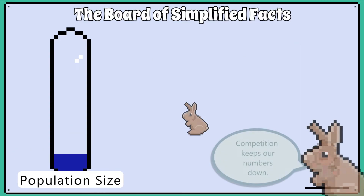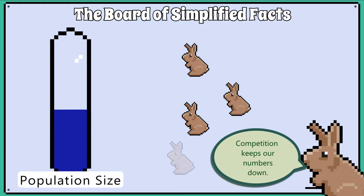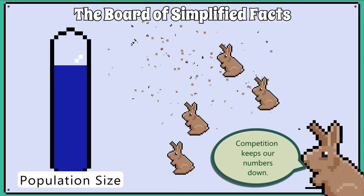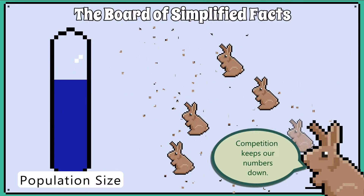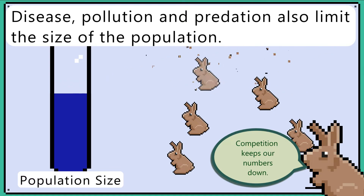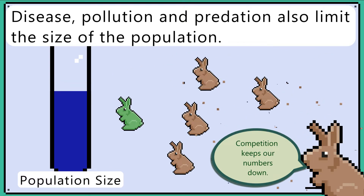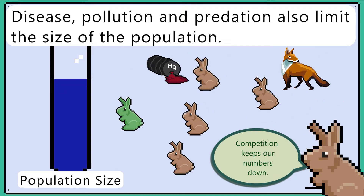Population size of a species can be affected by competition, and usually keeps the population size from forever increasing. Of course, other things also limit population sizes such as disease and pollution.